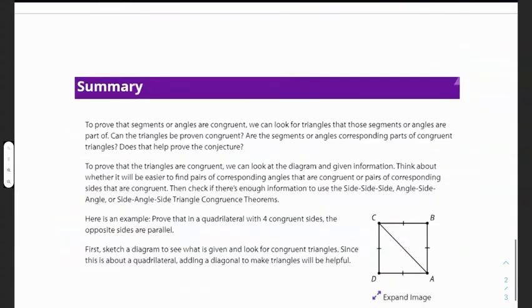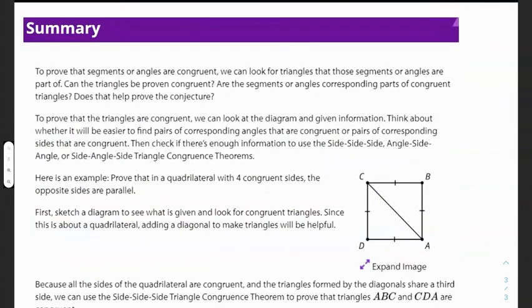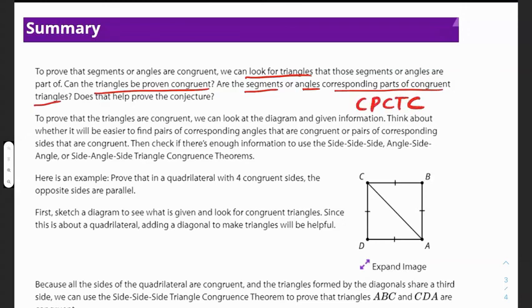In summary, we have to determine if we can prove the triangles are congruent. If they are congruent, we can use CPCTC — corresponding parts of congruent triangles are congruent — to know things about their segments and angles. We use the reflexive property and apply, if there's enough information, side-side-side, angle-side-angle, or side-angle-side triangle congruence theorems.